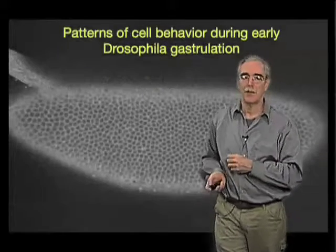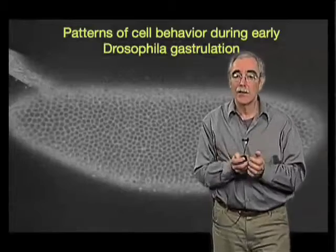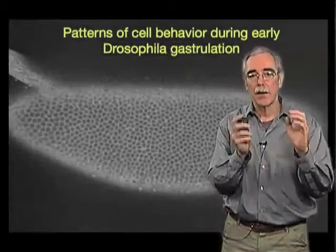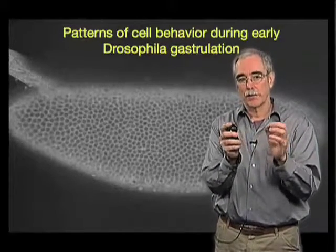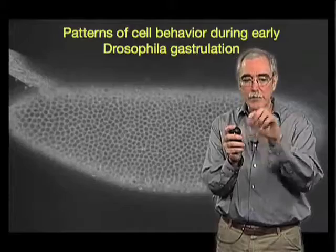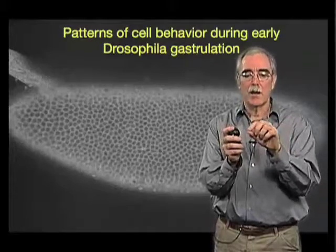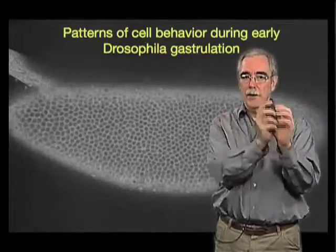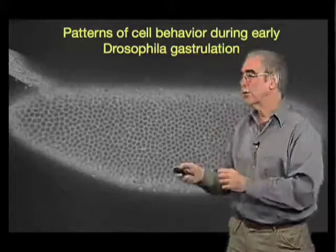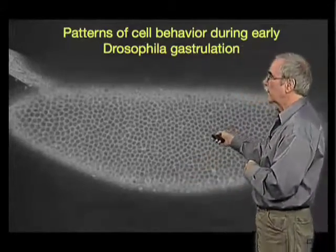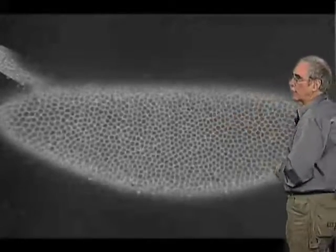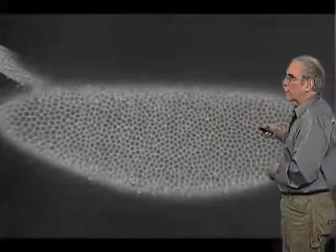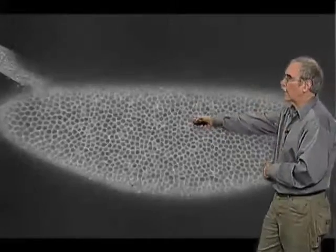We can actually watch these behaviors in living embryos by tagging the surfaces of cells with fusion proteins between GFP and various membrane proteins, so we can follow individual cell shapes. And watching this movie again, this is the blastoderm stage that we talked about.